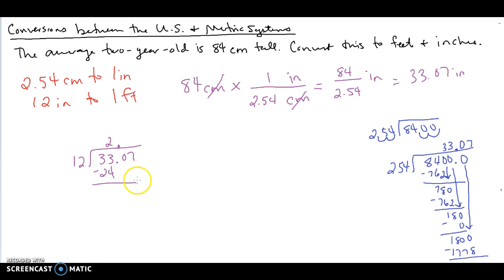12 goes into 33 evenly twice. So that's minus 24. That's going to leave us with nine. That's what's left over in terms of our inches. Now I know that we do have this decimal part that we're supposed to contend with, but because we're just looking for a pretty number, we're going to say that the final answer here is going to be two feet nine inches.